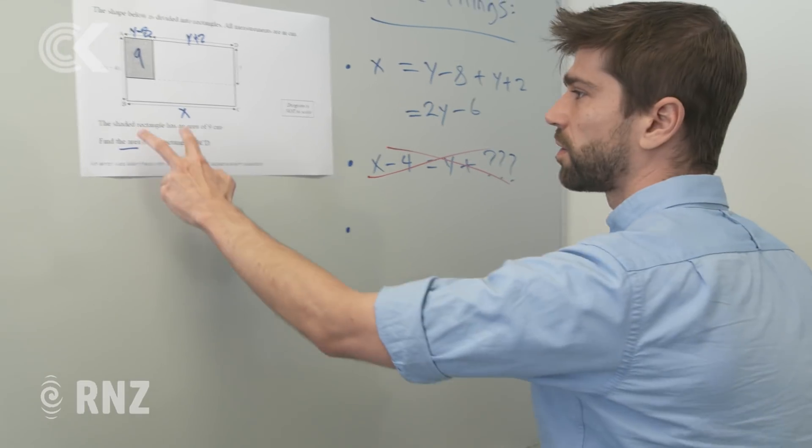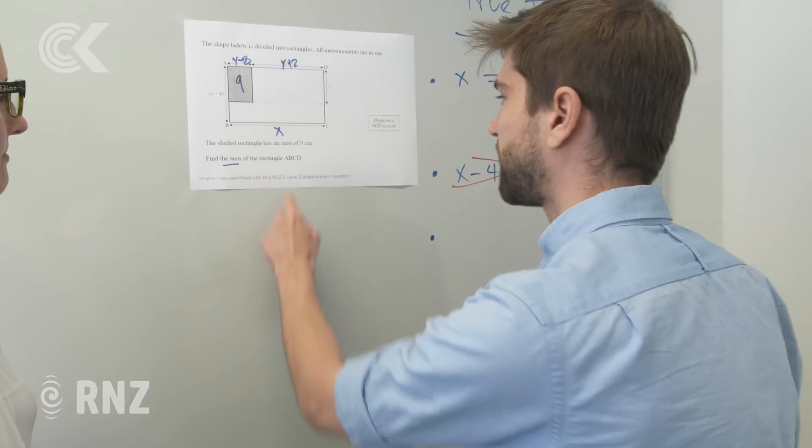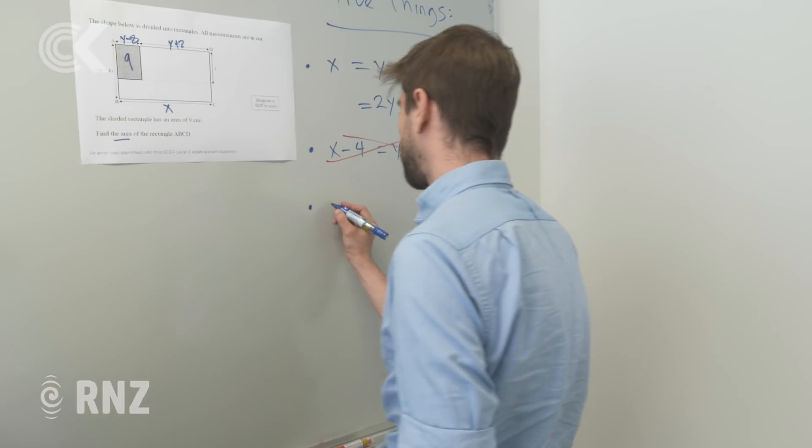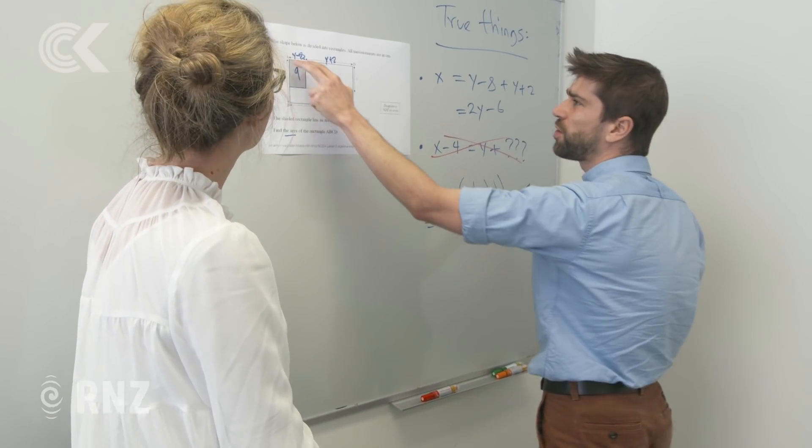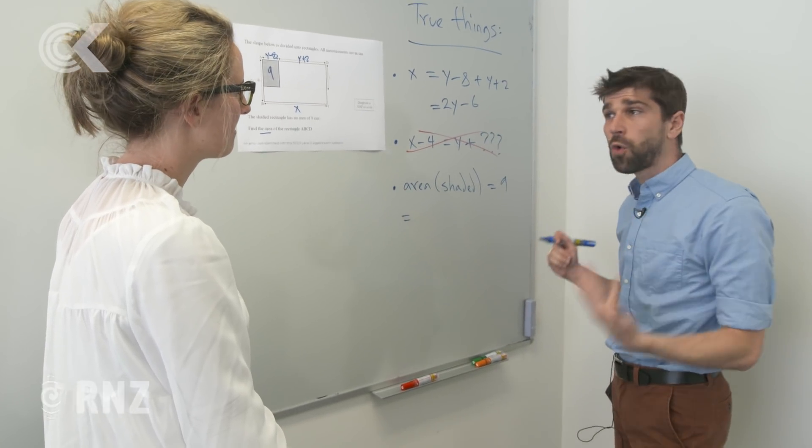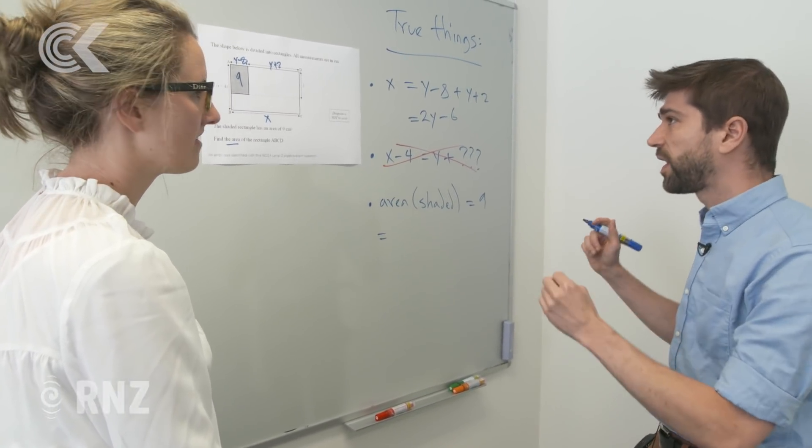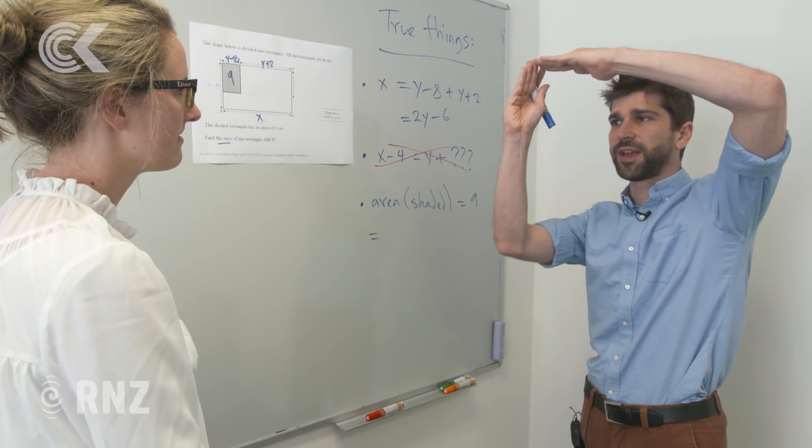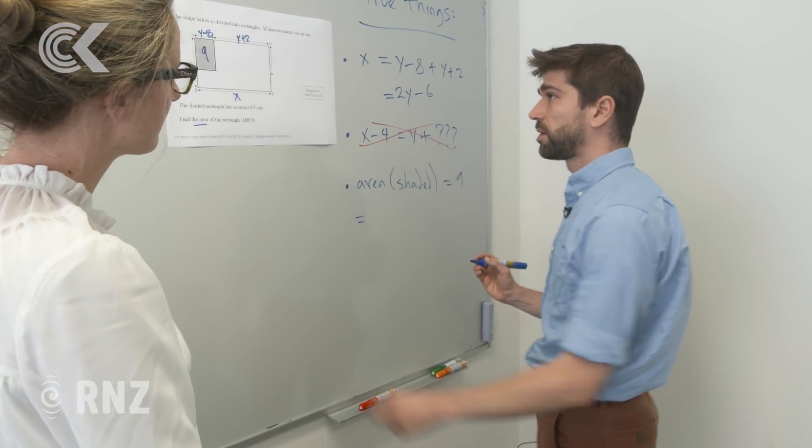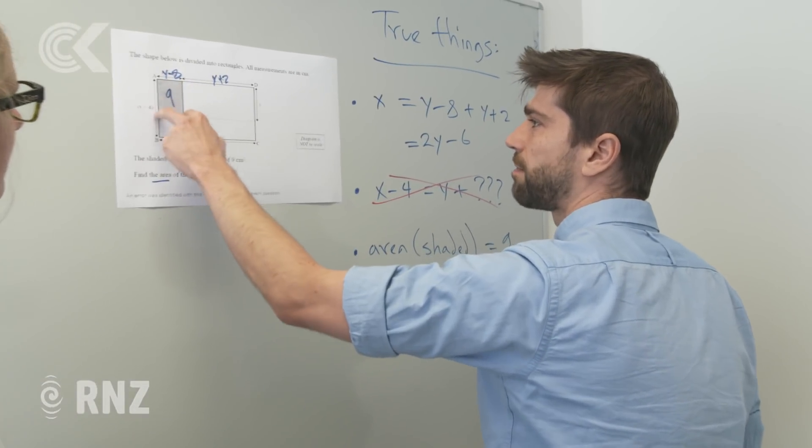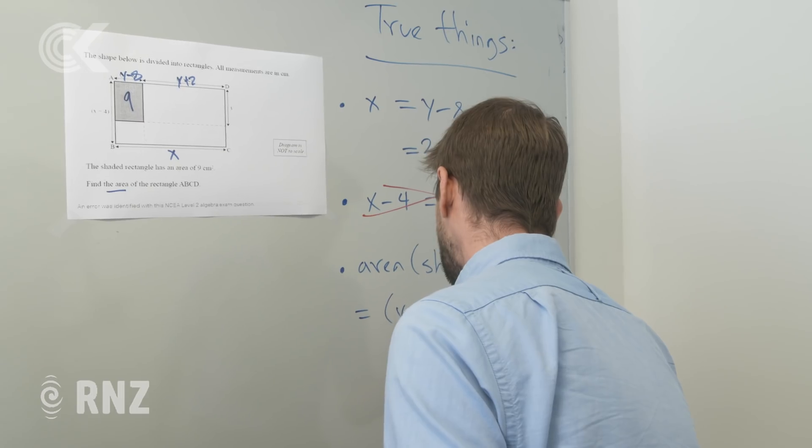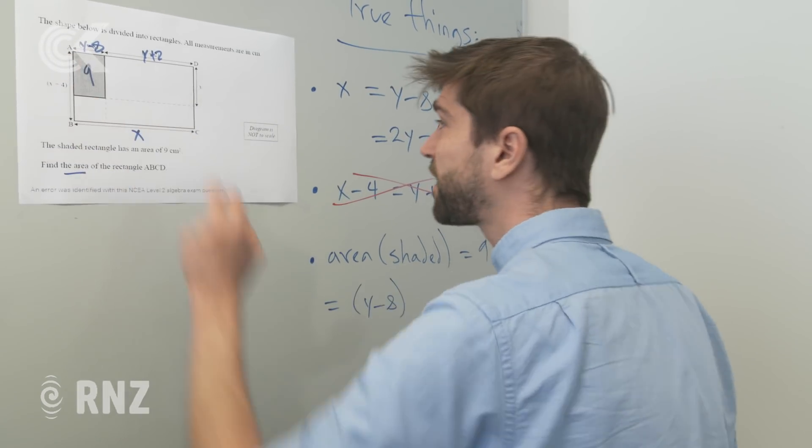So third thing we know is we're told this shaded rectangle has an area of 9 centimeters squared. And what's the area of a rectangle? So we know that it's 9, but we also know things about this rectangle. We've got its lengths labeled for us. And we know that the area of a rectangle is a product of its lengths. So we're going to get, again, from this geometric information, an algebraic equation. Because the area of a rectangle is going to be base times height. So what is the base of this? We can see it's y minus 8. And what is the height of this?